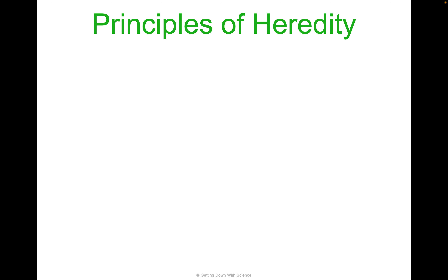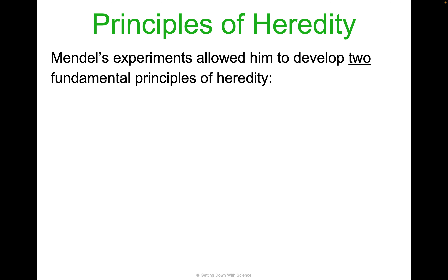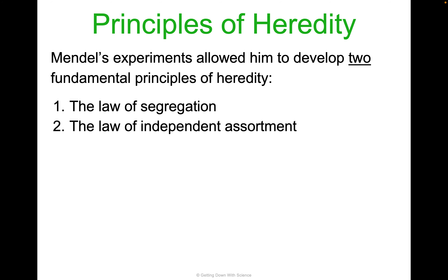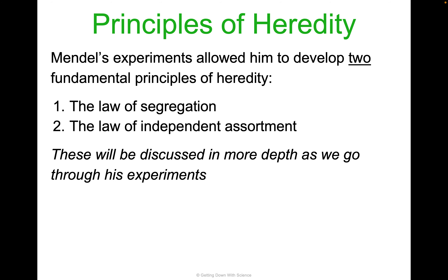Let's get back to Mendel's principles. In his experiments hybridizing pea plants — taking the P generation, mating them, noticing F1 generation colors, then mating those — he developed two fundamental principles true for all of genetics. One is the law of segregation. The second is the law of independent assortment. These two things really apply to all of genetics.